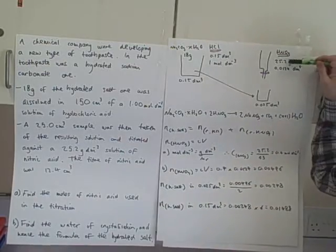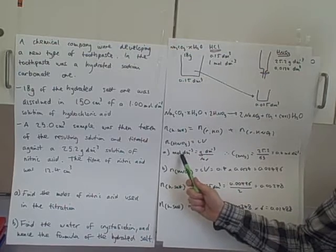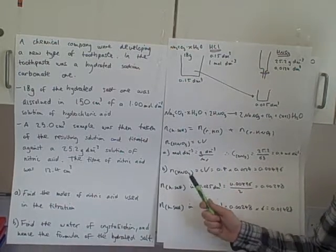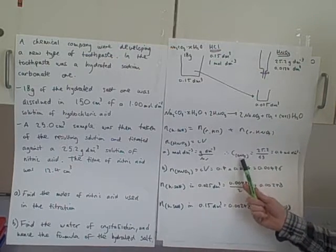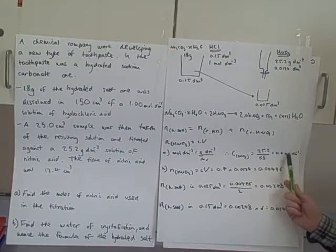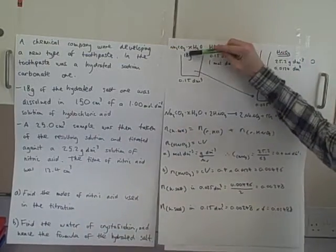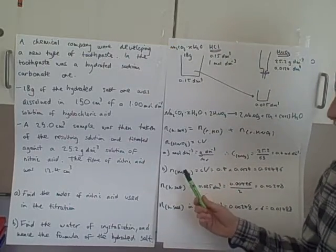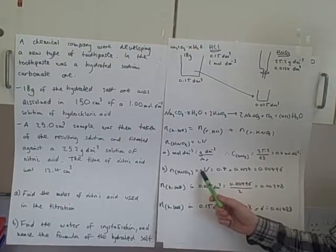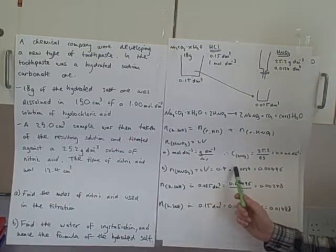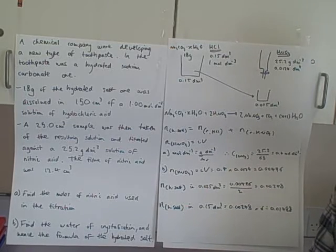For part (a), we find the moles of nitric acid. We know the concentration in grams per dm³, so we divide by the Mr to find moles per dm³ — derived from moles equals mass over Mr. Rearranging and feeding in the numbers, the concentration of nitric acid equals 0.4 mol/dm³. Now for the main question: moles of nitric acid equals CV. Plugging in the numbers gives 0.00496 moles of nitric acid.